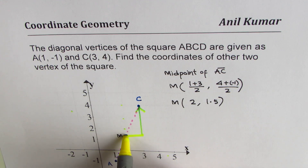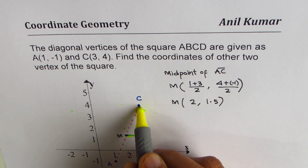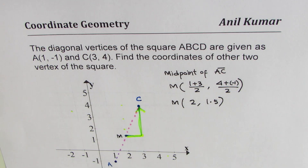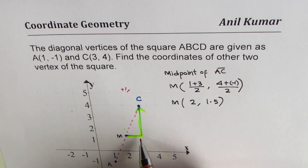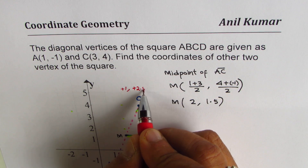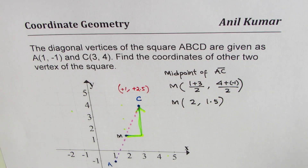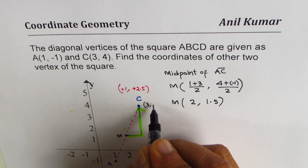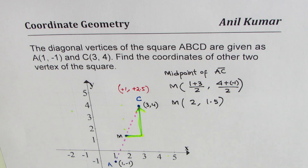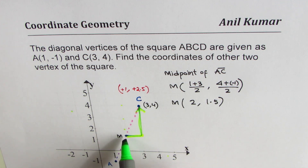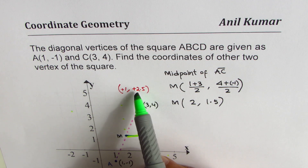From the midpoint of the diagonal to point C, we move one unit to the right and 2.5 up. So to move from M to C we add 1 to the x-value and add 2.5 to the y-value. Point C is (3, 4) and point A is (1, -1). Now, how do we get the other vertices of the square? We'll use the reverse of this movement.